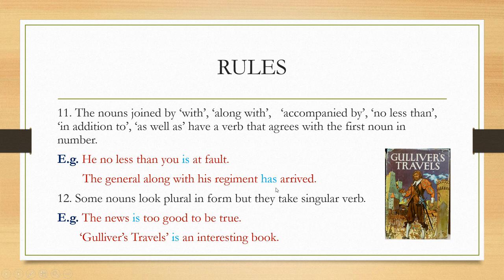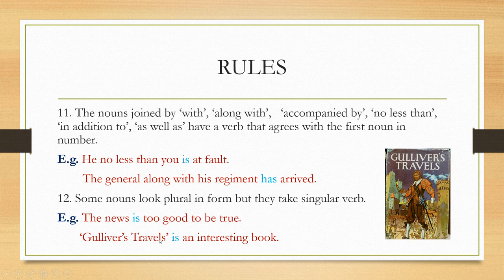'He no less than you is at fault' — the verb agrees with 'he', the first subject, not 'you'. Remember, when nouns are joined by 'with', 'along with', 'accompanied by', or 'as well as', the verb agrees with the first noun in number. Some nouns look plural in form but take a singular verb. For example, 'The news is too good to be true.' Though 'news' ends in 's', it is singular — it is short for North, East, West, and South. Also, 'Gulliver's Travels is an interesting book' — it is a book title and treated as singular.